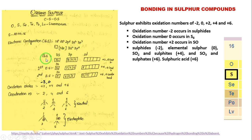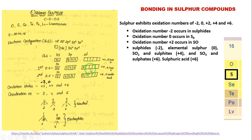So, sulfur in the ground state has 2 electrons in the 3s orbital and 4 electrons in the 3p orbital, of which 2 are lone electrons. Because of this, sulfur can form 2 covalent bonds. In the first excited state, one of the electrons in the 3p orbital is excited to the 3d orbital, so it gains 4 lone electrons. By using these 4 electrons, sulfur can achieve a +4 oxidation state or form 4 bonds.